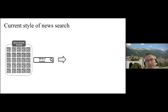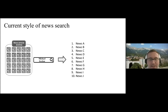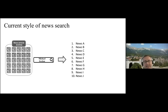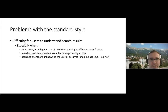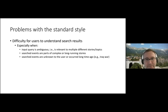The current style of news search is basically not so different from a web search — essentially 10 blue links. There are some solutions like clustering news from different sources together, but it is almost the same as a web search: raw documents are ranked. We think this may not be the best approach, because news are a specific type of document — events can be part of complex or long-running stories.